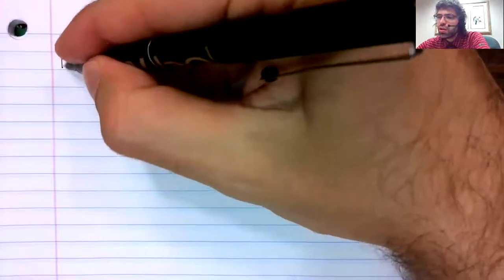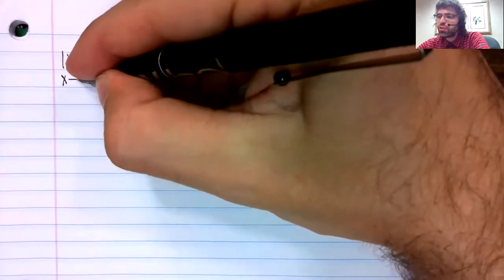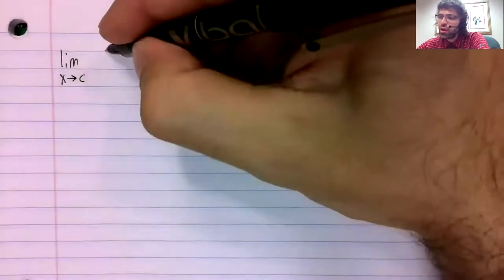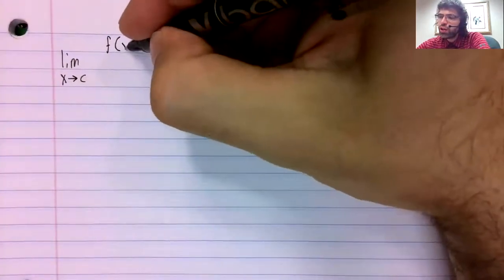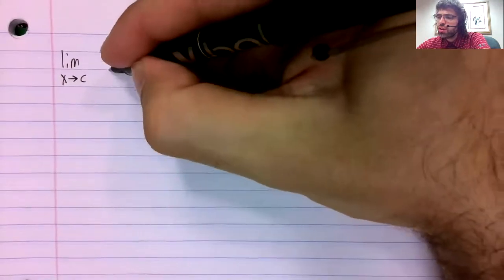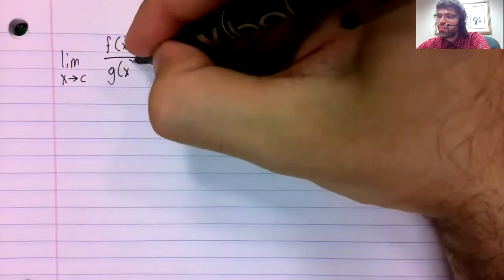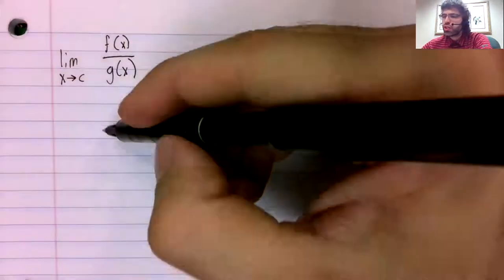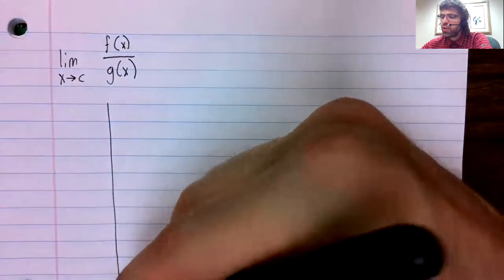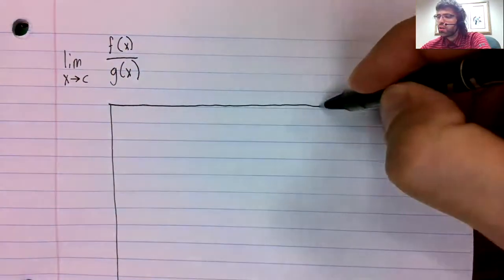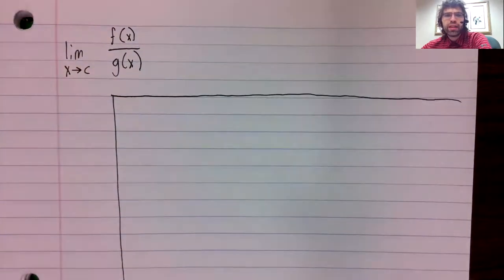Let's summarize what can happen when we take the limit of a quotient. So we're going to take the limit as x approaches something of one function divided by another function, and we'll look at a number of cases.